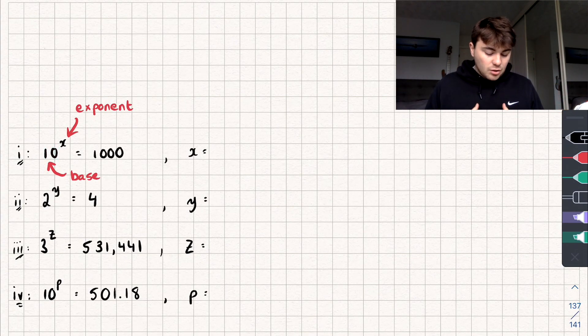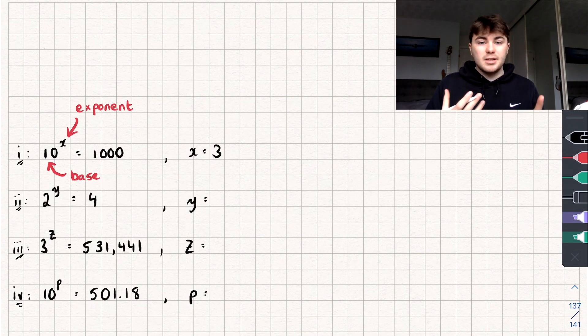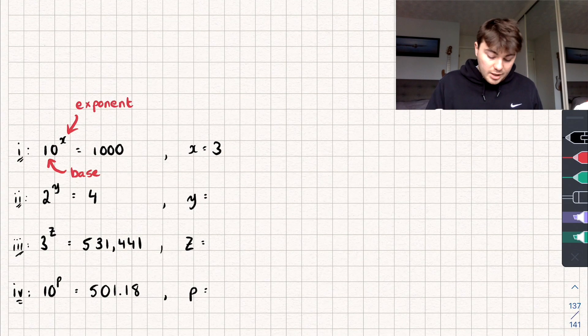If I asked you to solve this to find that value of x, well you could probably do it in your head and you'd tell me that it's 3, so x equals 3, pretty easy. If we had 2 to the power of y equals 4, again you could probably solve that quite easily and tell me that y is going to be equal to 2.